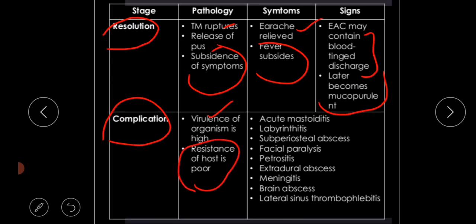If the resistance of the host is poor or the organism is highly virulent, complications can occur, which include acute mastoiditis, labyrinthitis, subperiosteal abscess, facial paralysis, petrositis, extradural abscess, meningitis, brain abscess, and lateral sinus thrombophlebitis. These are the complications if resolution does not occur.